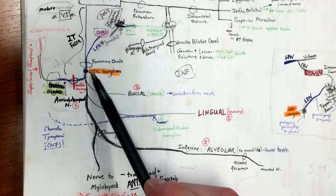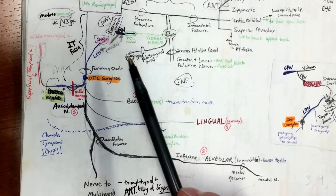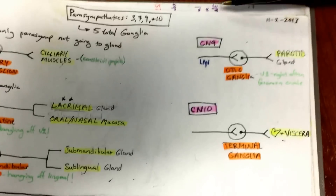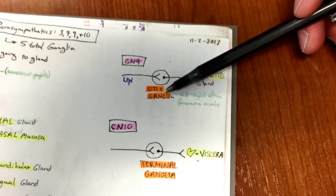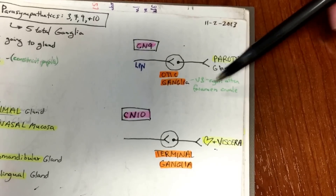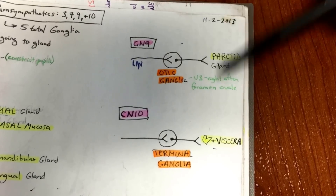Now you know: lesser petrosal gets to the otic ganglion through foramen ovale. What is lesser petrosal trying to innervate? Going back to the beginning — parasympathetics three, seven, nine, and ten — cranial nerve nine's lesser petrosal hits the otic ganglion, going to the parotid gland. And this is happening right after foramen ovale with V3 right there — that's the preview, and now the details.